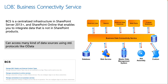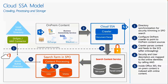You can also write custom BCS connectors to bring your line-of-business data into the search index. At a high level, Cloud SSA lets you crawl all your on-prem content — SharePoint Online, Exchange, SQL Server, or any custom line-of-business application. That content is crawled, parsed, and plugged through the search content service into the SharePoint Online index, which is owned by your tenant. The data is secure and within your tenant boundary.